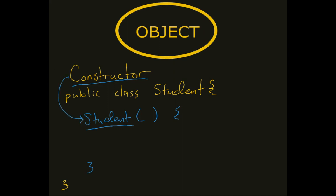So what happens is, when I write the words new student, this new operator creates a new instance of the student class by activating this student constructor.